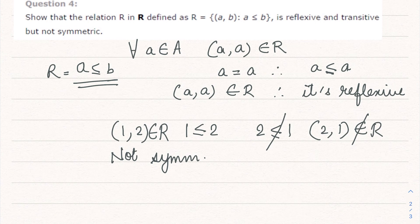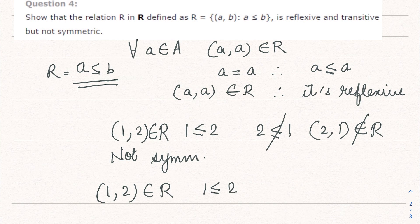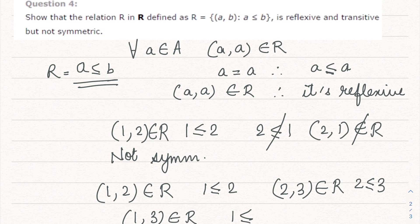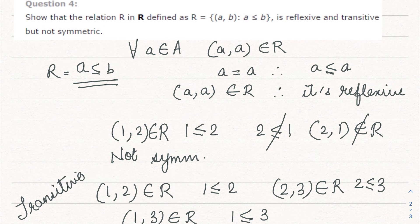Now let's check if it is transitive. Take (1, 2): 1 ≤ 2, belongs to R. Take (2, 3): 2 ≤ 3, also belongs to R. Since 2 is greater than 1 and 3 is greater than 2, definitely 3 is also greater than 1. So (1, 3) also belongs to R because 1 ≤ 3. Therefore this relation is transitive. If you like the video, please like, share, and subscribe.